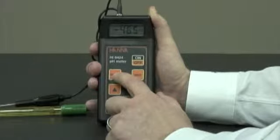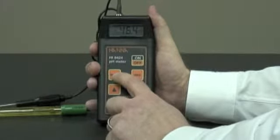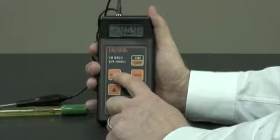In the millivolt range, we can see pH in millivolts, or we could use an ORP electrode.